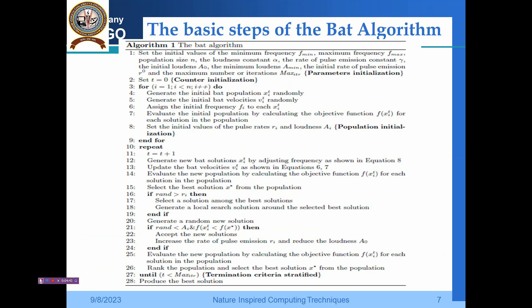Now we have a glance at this Bat Algorithm. In algorithm step 1, we set the initial values: minimum frequency f_min, maximum frequency f_max, population size n, loudness constant alpha, rate of pulse emission gamma, initial loudness A_0, minimum loudness A_min, initial rate of pulse emission r_0, and maximum number of iterations. These are the parameter initializations. Then immediately you go for the counter initialization.